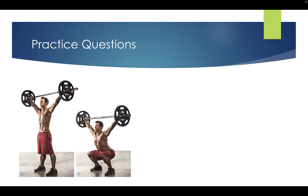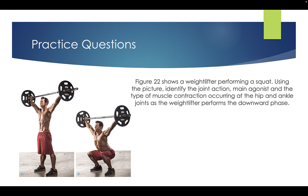Practice question: Figure 22 shows a weightlifter performing a squat. Using the picture, identify the joint action, the main agonist, and the type of muscle contraction occurring at the hip and ankle joints as the weightlifter performs the downward phase. You need to identify what joint action is happening at the hip and ankle, what is the main agonist at those joints, and what type of muscle contraction is occurring during the downward phase.